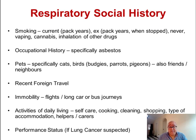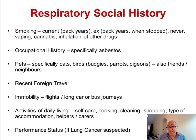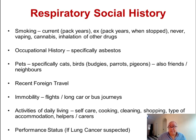Pets are really important to discuss. Cats may be relevant in the context of atopy or asthma. Birds — particularly budgies, parrots, or pigeons — may be associated with the development of interstitial lung disease. It's not just a patient's own pets that could be an issue; it's worth exploring whether they have contact with animals or pets when visiting friends, neighbours, or family.